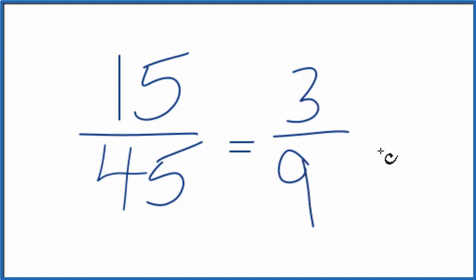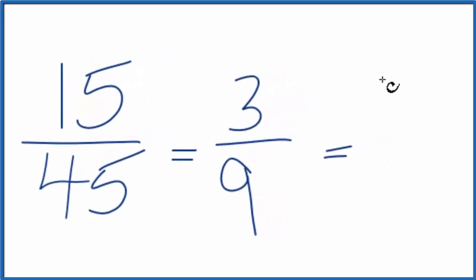From here, you can divide the numerator by 3: 3 divided by 3 is 1. Then divide the denominator: 9 divided by 3 is 3, which is the same answer we got before.